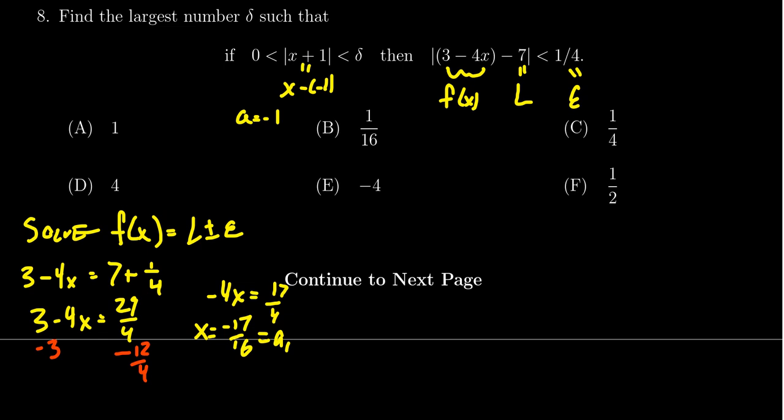We have to also do the other equation. 3 - 4x = 7 - 1/4, which becomes 27/4. We still subtract 3 from both sides, which translates to 12/4. This gives us that -4x = 15/4. When we divide by -4, we get x = -15/16, which is our A2.